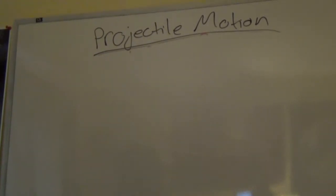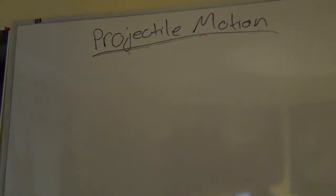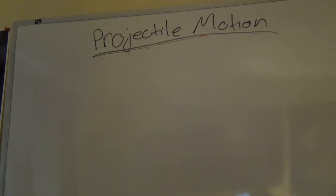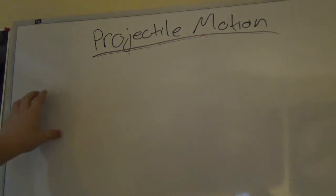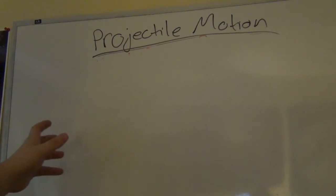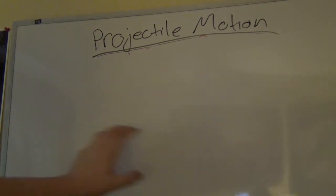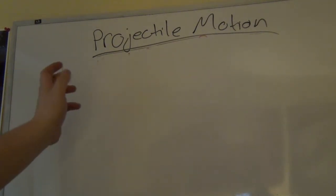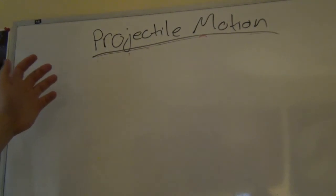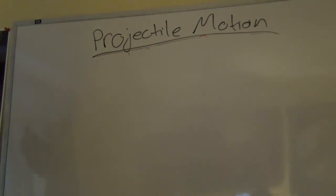In this video we're going to talk about projectile motion in terms of a college physics 1 class — generally where you'll first learn this topic. A projectile is when you have something like a cannon or a gun shooting something. The only force on it is the initial force you put in and then gravity, or any kind of constant acceleration. You don't have thrust on it like a rocket.